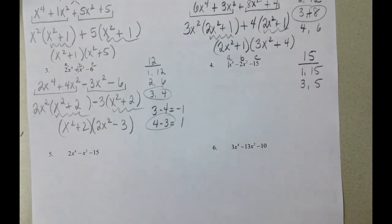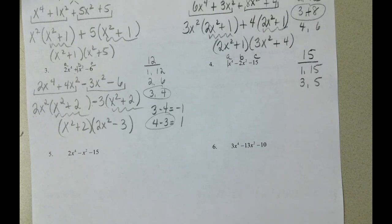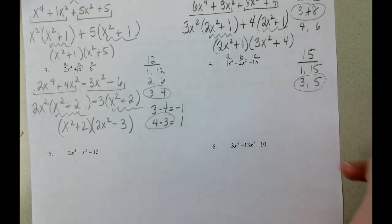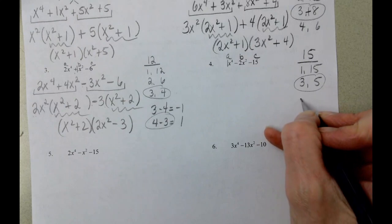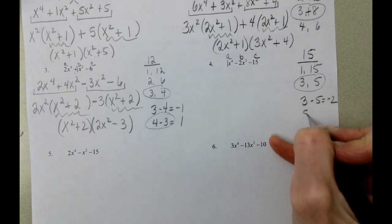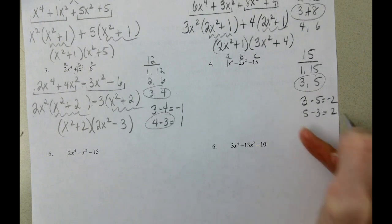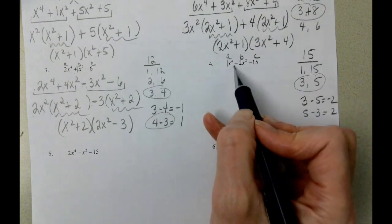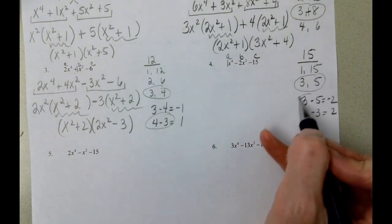Will either of those combine to be 2, either add or subtract to be 2? The 3 and the 5. So it could be 3 minus 5, or it could be 5 minus 3. We need negative 2. So 3 minus 5.